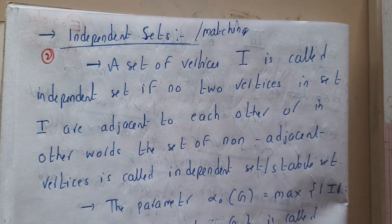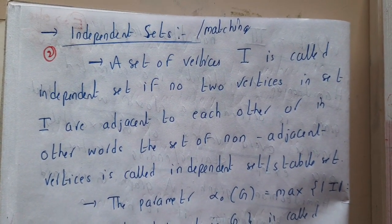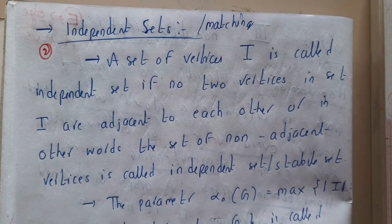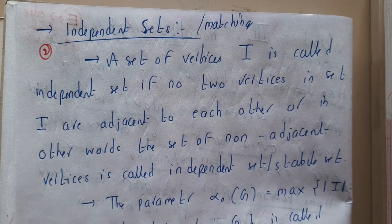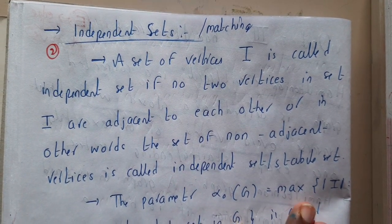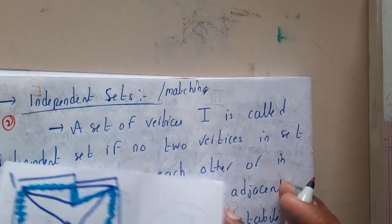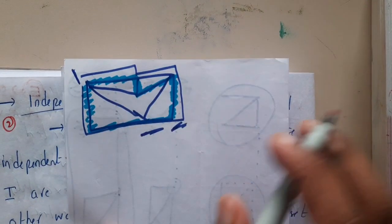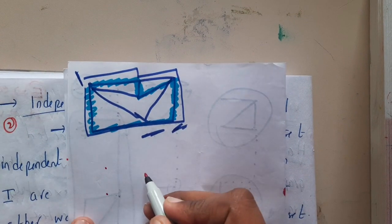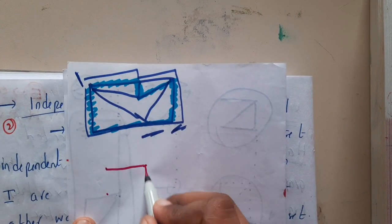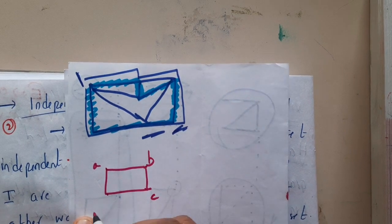Hello guys, we are back with our next lecture. In this lecture, let us go through independent sets, also called matching. So basically, what are independent sets? In simple words, I am talking about graphs. In graphs, when can you say a particular set is independent? Assume you are having a graph.